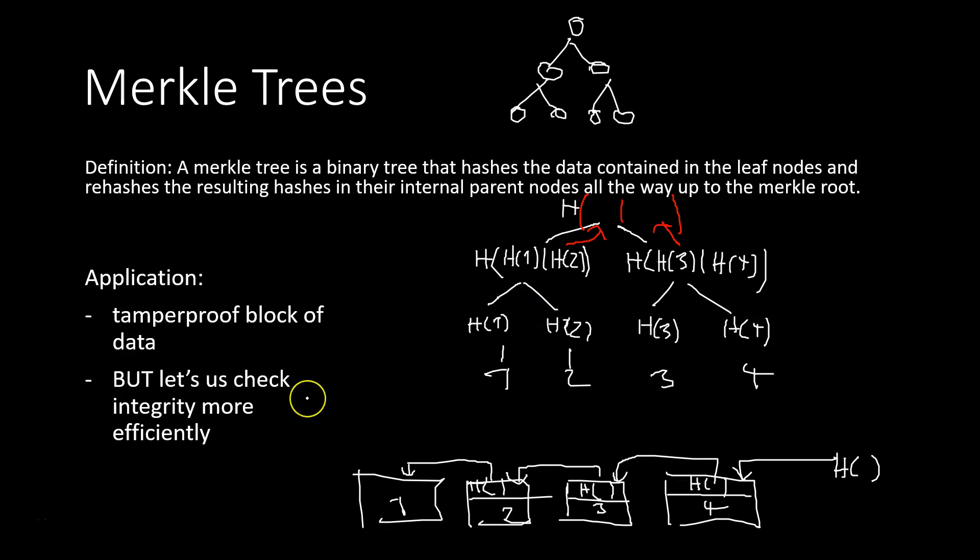So in fact, checking integrity in a Merkle tree is possible in big O of log n, compared to big O of n in such a chain structure, in the linked list structure. So it can make a big difference.